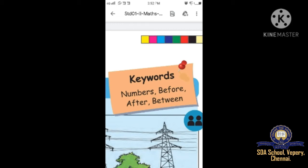Shall we learn the keywords? The keywords are: Numbers, Before, After, and Between. Numbers go on and on. Before number means, in Tamil, 'Munnadi.' After number means the next number. Between means in the middle.